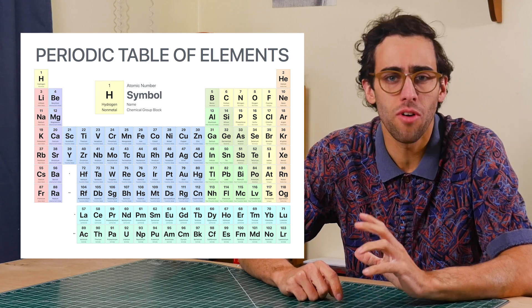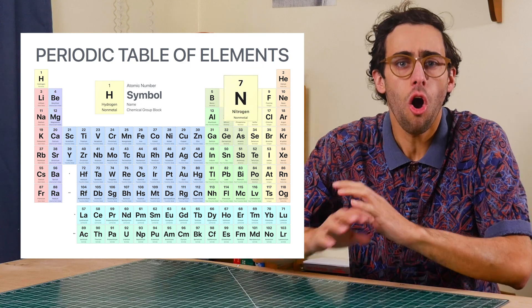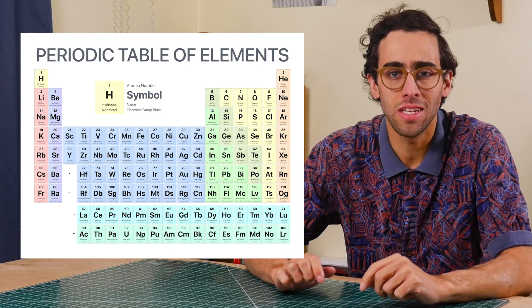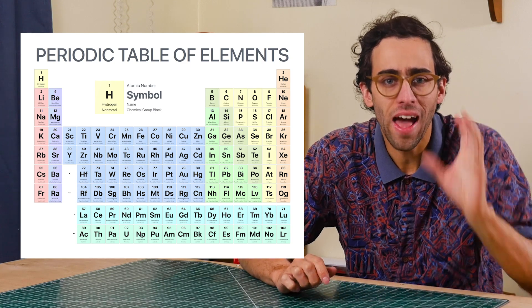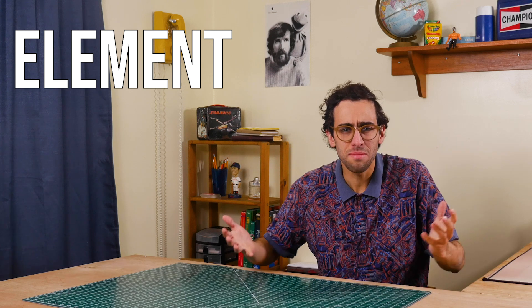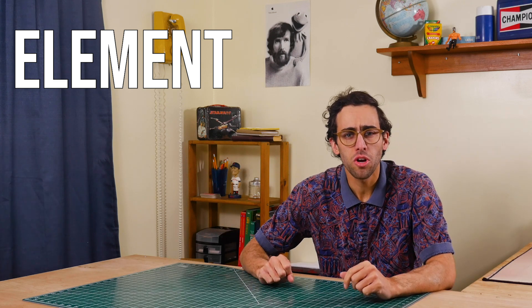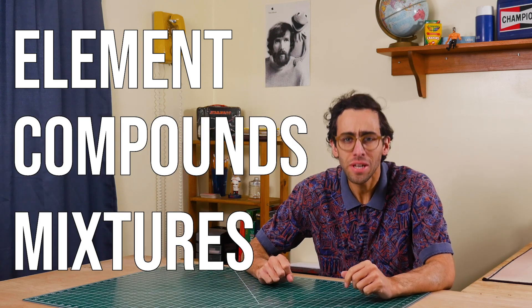Here we have oxygen and hydrogen, carbon and nitrogen. All of these ingredients are called elements. Now you may have heard this word before — element — but what does it mean? And what are compounds and mixtures?